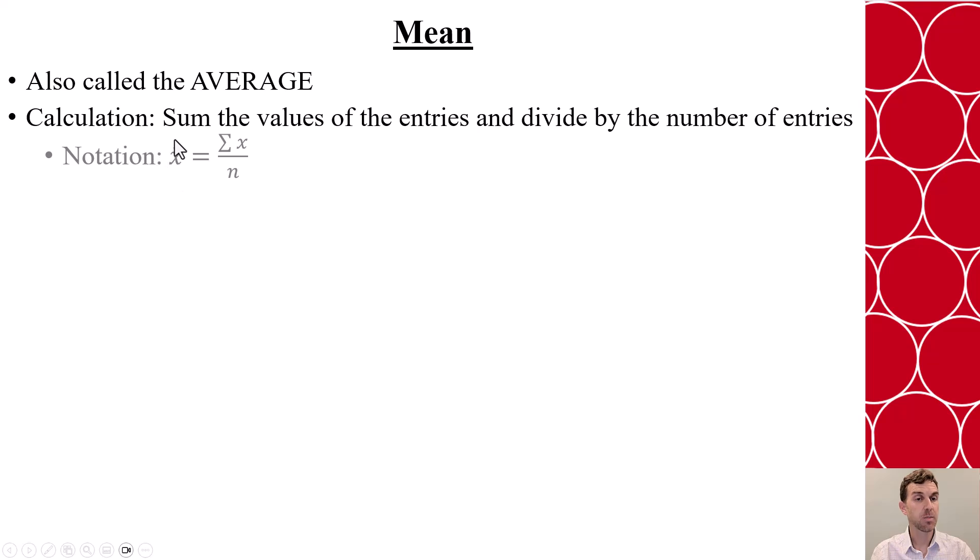When we're looking at the notation, we'll see X bar, which means the average, equals the sum of our X's over the number of entries.